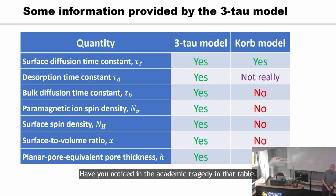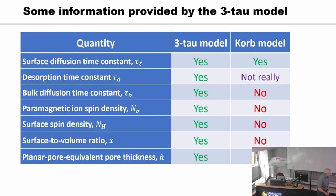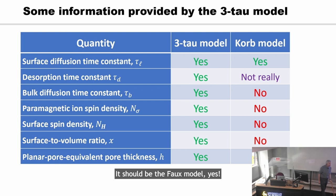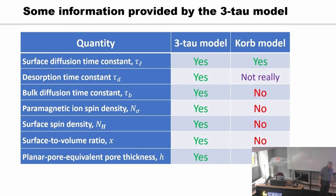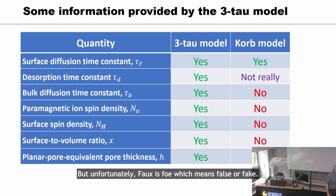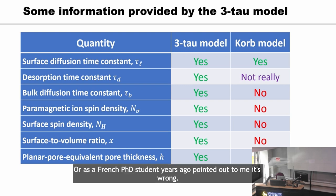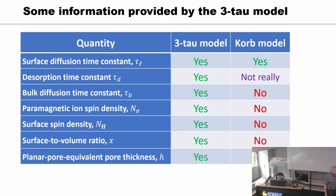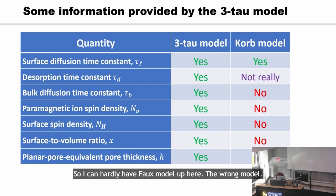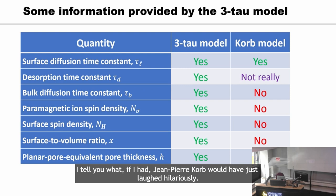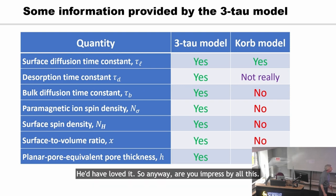Have you noticed an academic tragedy in that table? It should be the Fawkes model, yes. But unfortunately, 'Fawkes' is 'faux' in French, which means false or fake — or as a French PhD student pointed out to me years ago, 'he's wrong.' I could hardly have 'faux model' up here — the wrong model. Jean-Pierre Corbe would have just laughed hilariously. He'd have loved it.